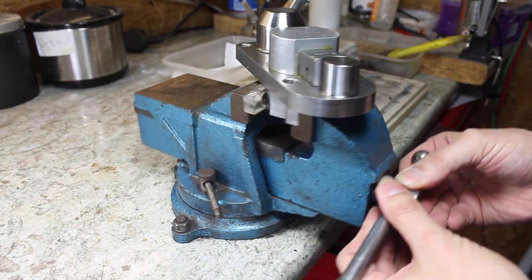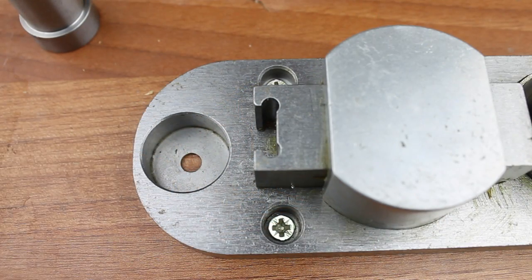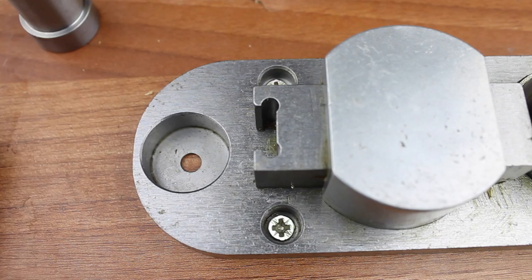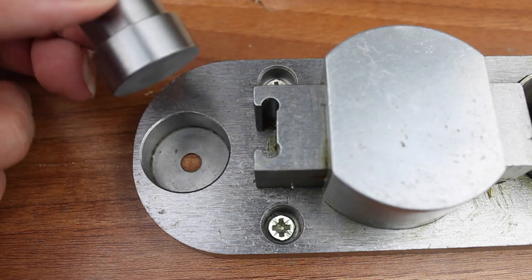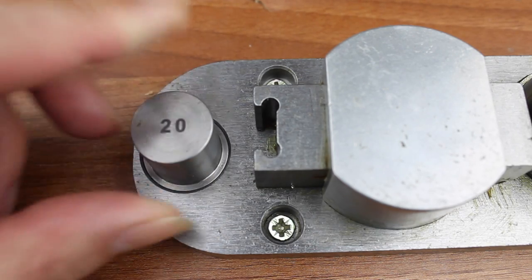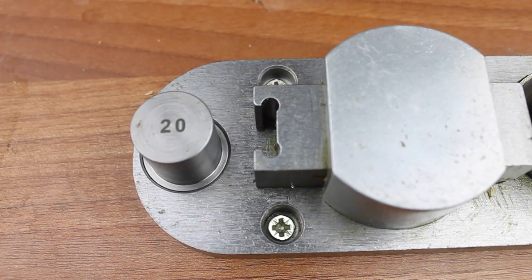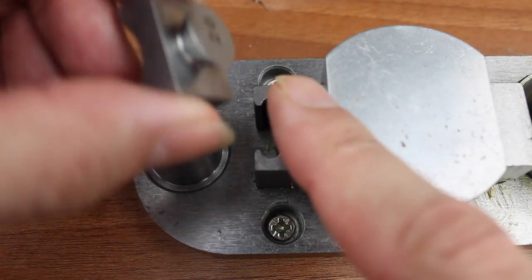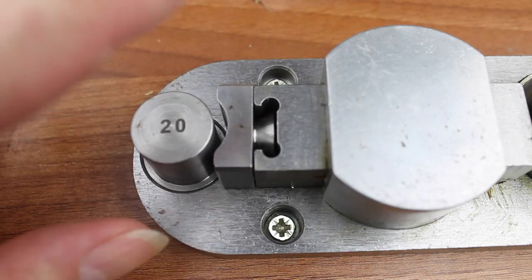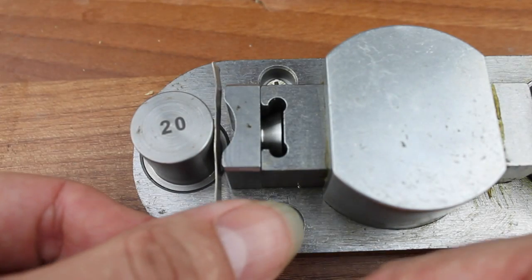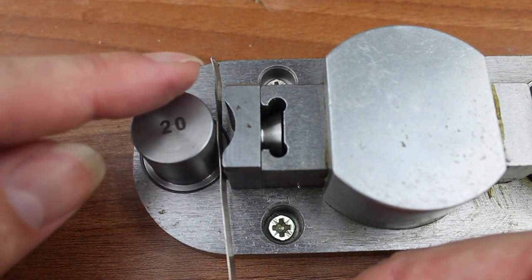To insert the poles and dies, simplicity itself. Choose the post that you want and just pop it into the hole there and that will sit there quite happily. Choose the die that you want, and due to the round stud at the back, these slot in very simply either way around - it doesn't matter. Just pop it in there, simple as that.